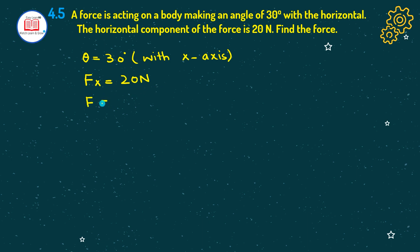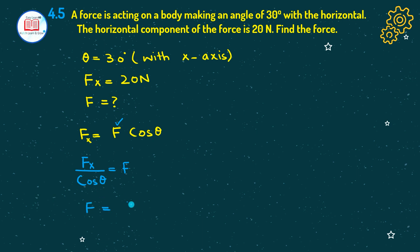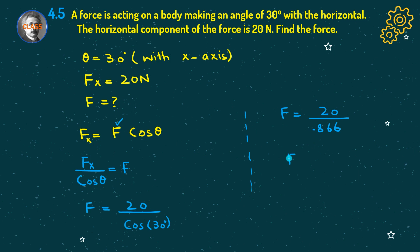We need to find the value of force F. We know that Fx is equal to F cos theta. To isolate F, we rearrange to get F equals Fx over cos theta. Substituting the values: F equals 20 divided by cos 30°, which is 0.866. So F equals 23.1 newton.